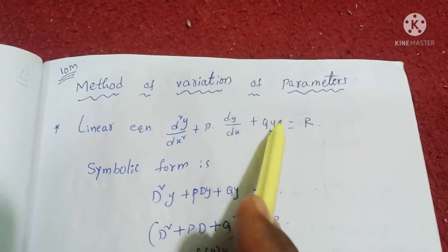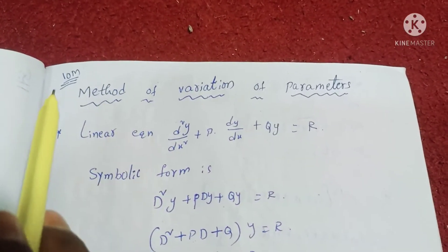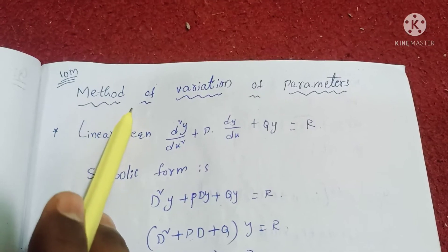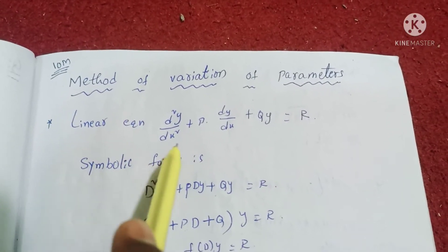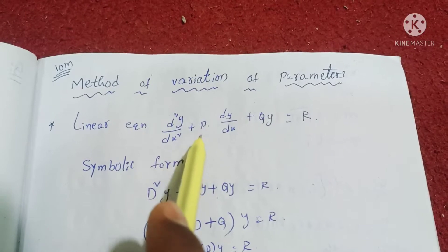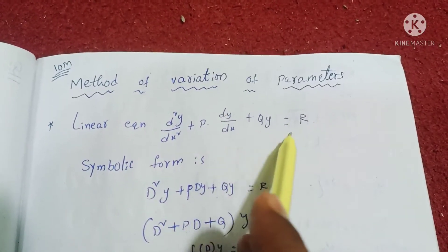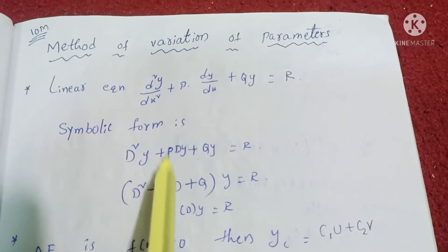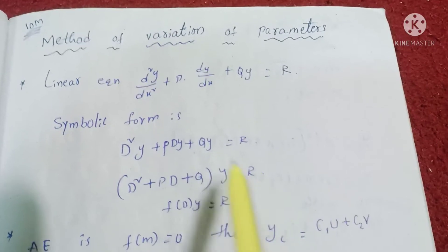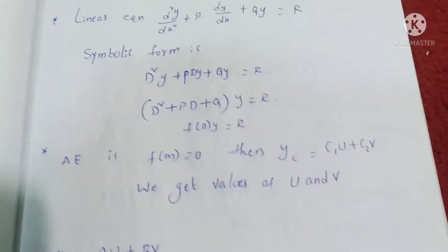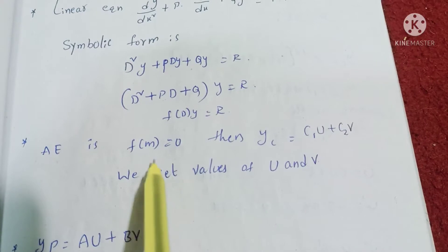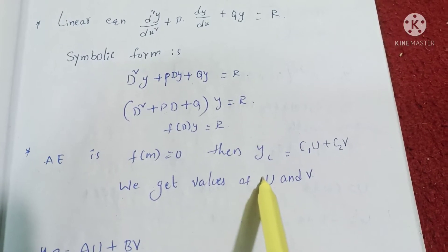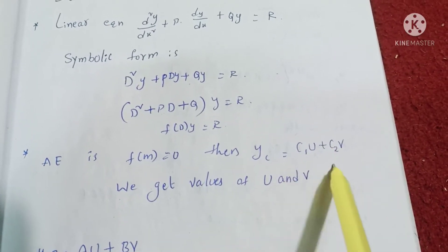Method of Variation of Parameters. The equation is: d²y/dx² + P(dy/dx) + Qy = R. In symbolic form, this is written as f(D)y = R. The auxiliary equation is f(m) = 0, and the complementary function is yc = c₁u + c₂v.